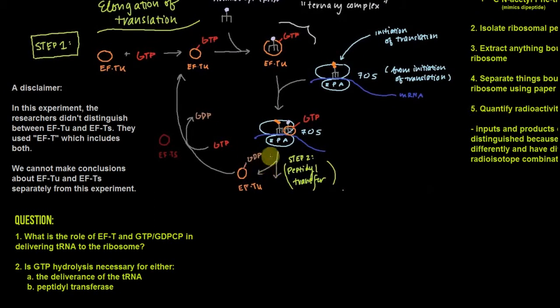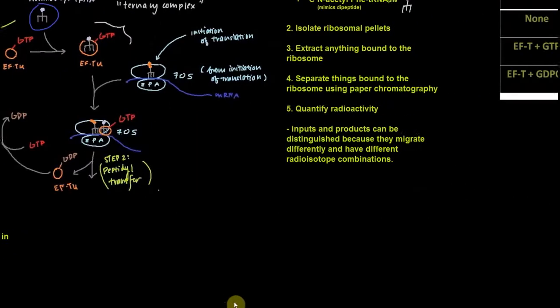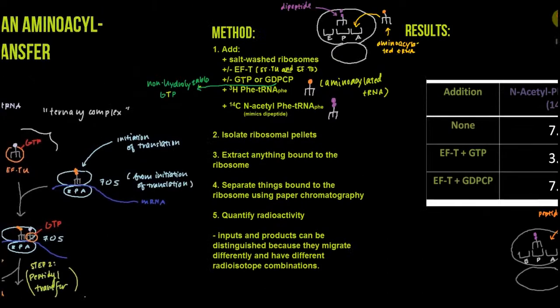Let's talk about the details of this experiment. There are two big questions. First, what is the role of EF-T and GTP or its non-hydrolyzable analog GDPCP in delivering tRNA to the ribosome? The second question is: is GTP hydrolysis necessary for either the deliverance of this aminoacyl-tRNA or peptidyl transfer?